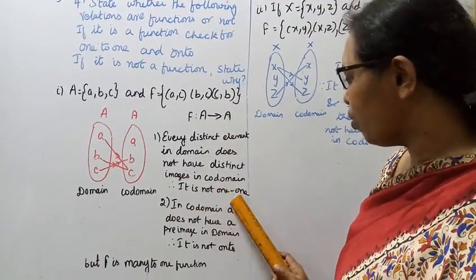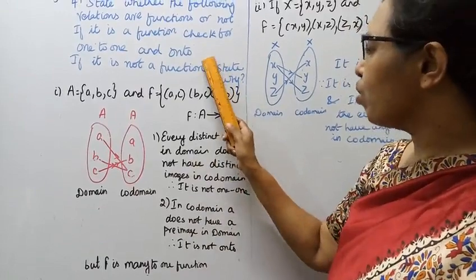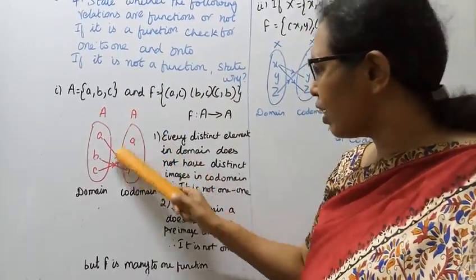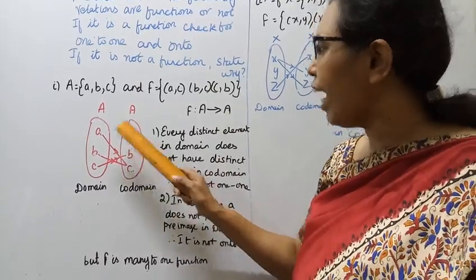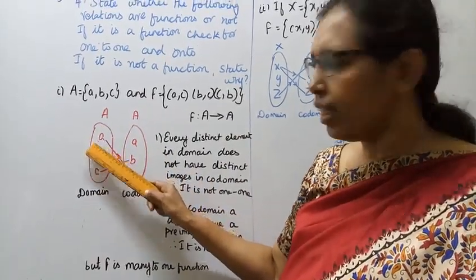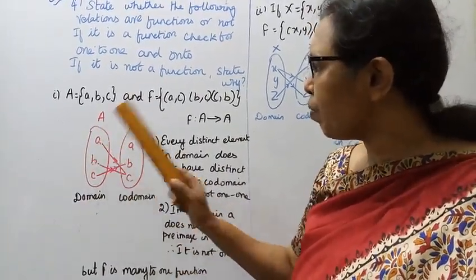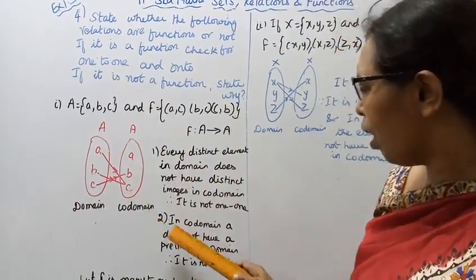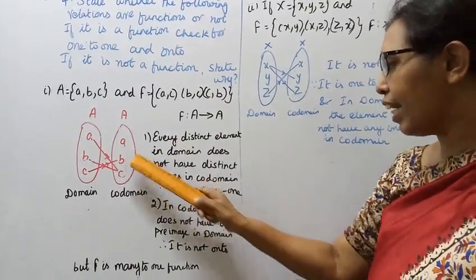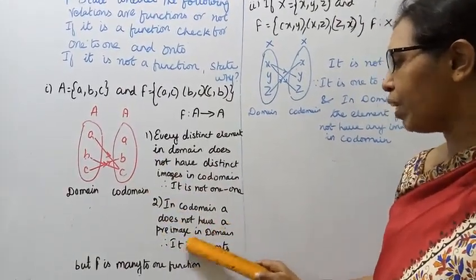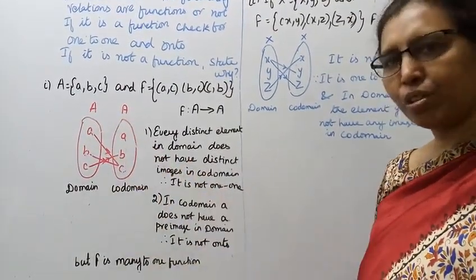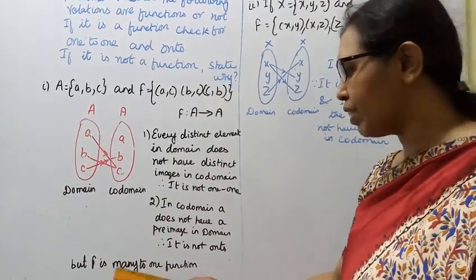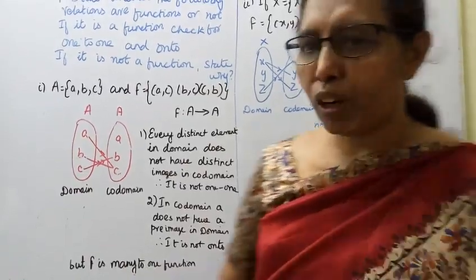Onto: every element in codomain should have a pre-image in domain. But in codomain, one element does not have a pre-image in domain. Therefore it is not onto. But F is a many to one function.